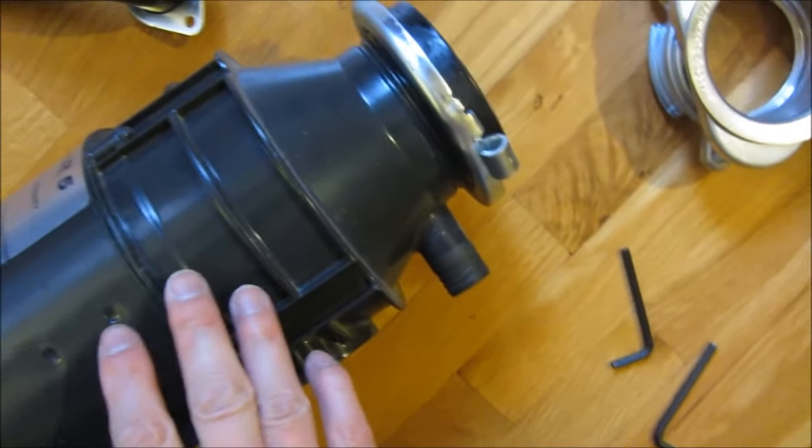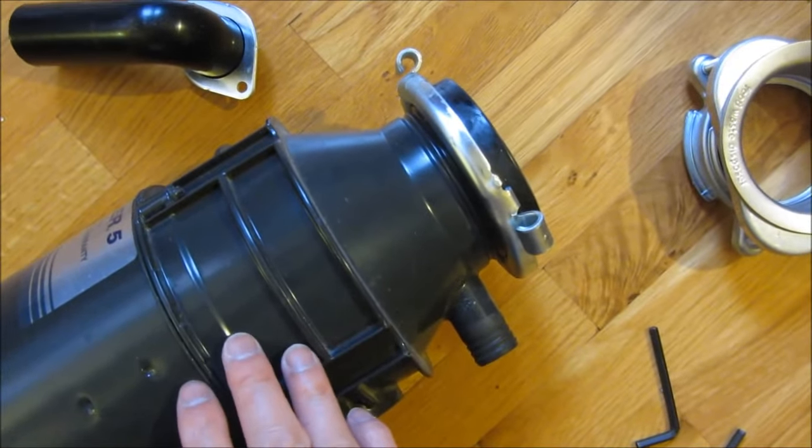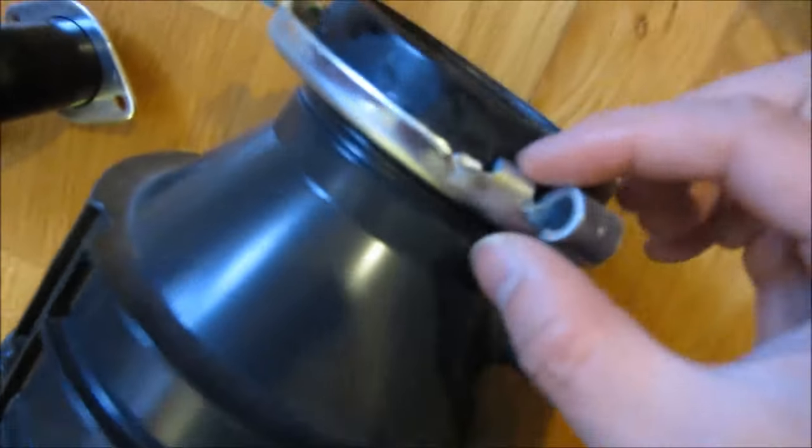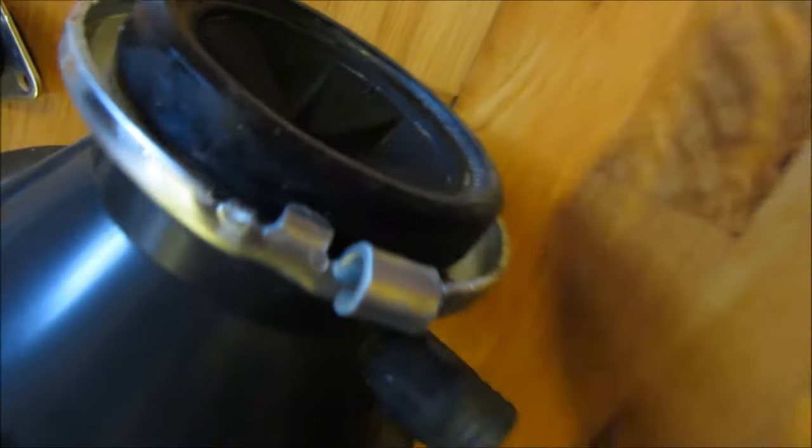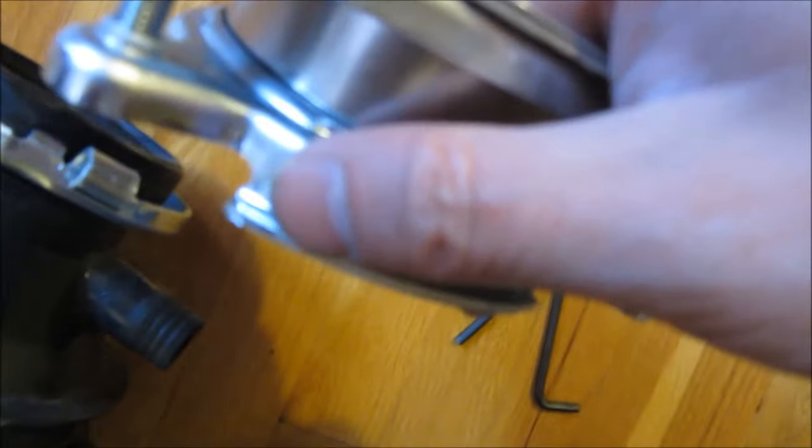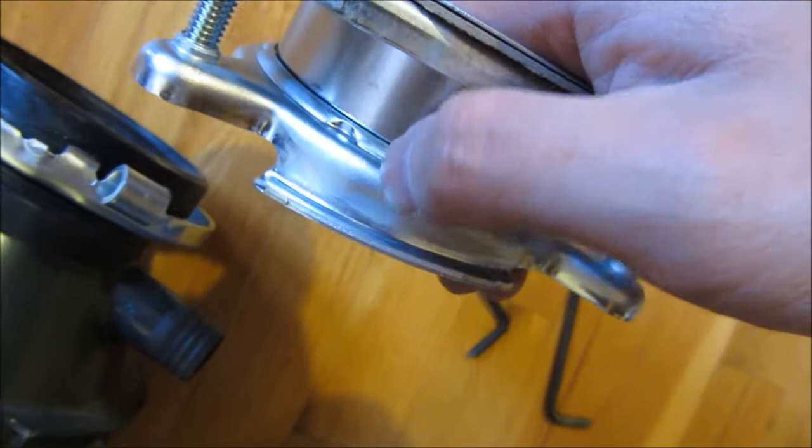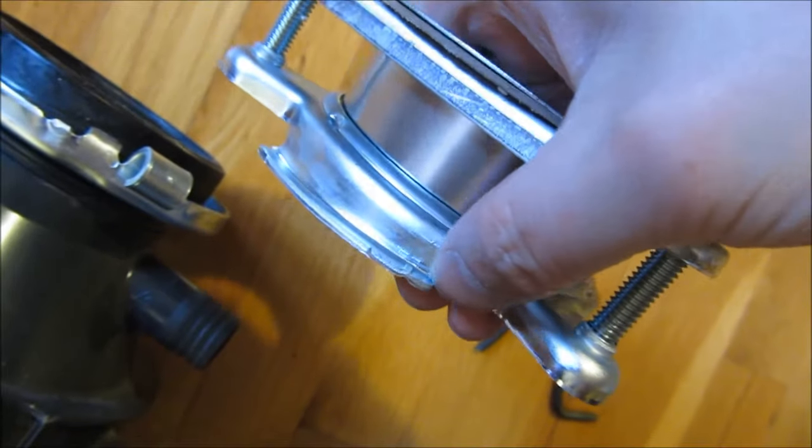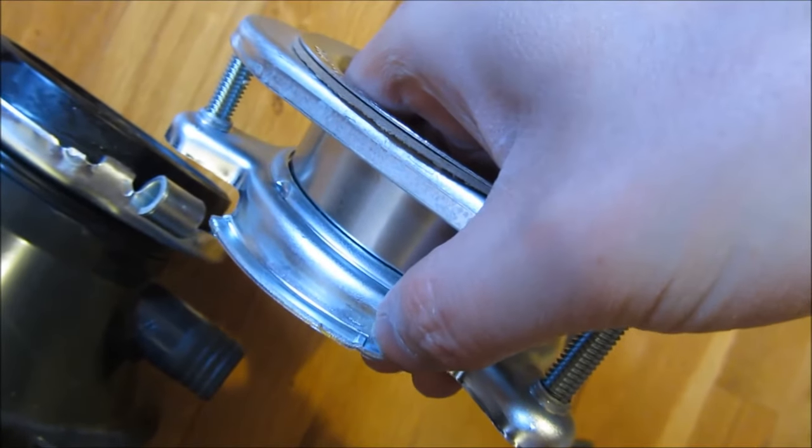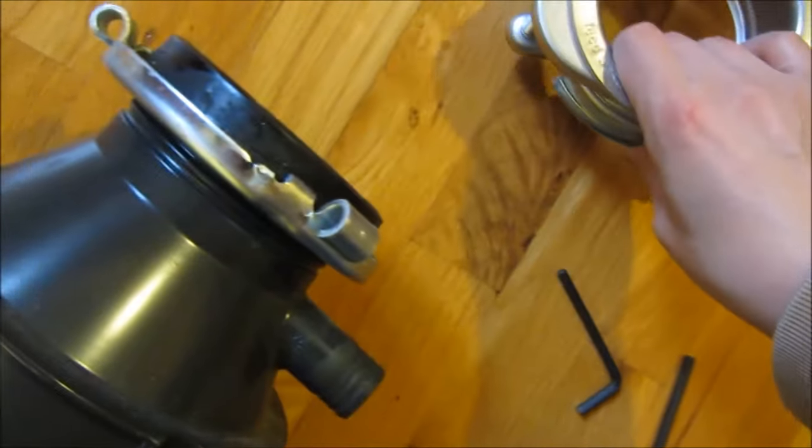Because when you're trying to mount this 10-pound thing underneath the sink, it's very hard to push that notch up against the beginning of the rail and slide it through unless you have the flange riding up at the top where the gasket is.